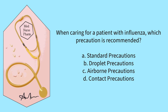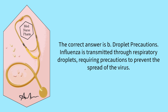When caring for a patient with influenza, which precaution is recommended? Standard, droplet, airborne, or contact? The correct answer is B, droplet precautions. Influenza is transmitted through respiratory droplets, requiring precautions to prevent the spread of the virus.